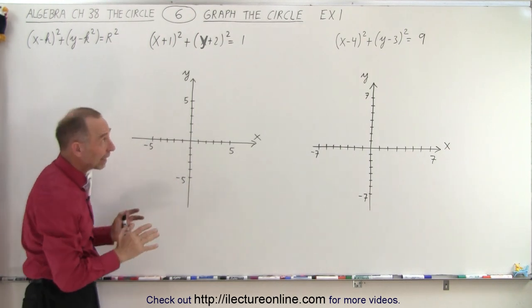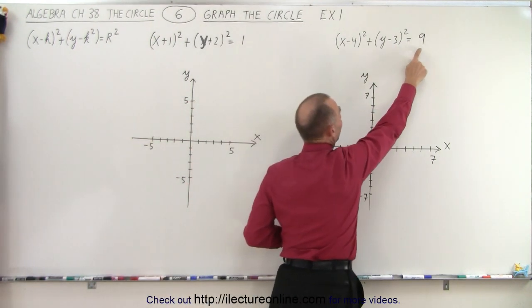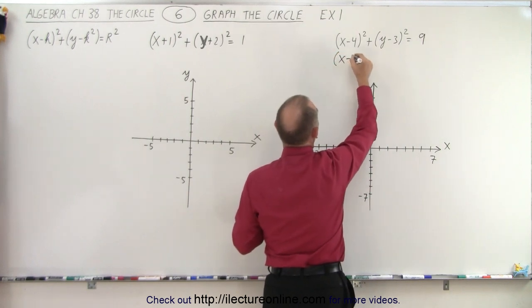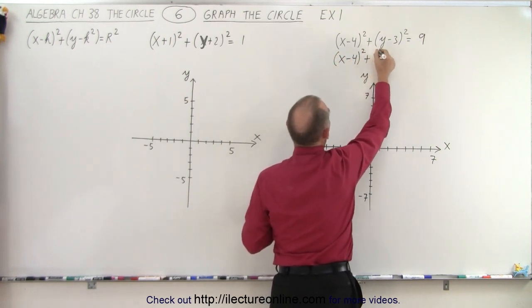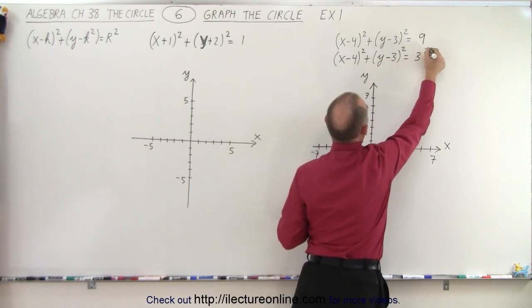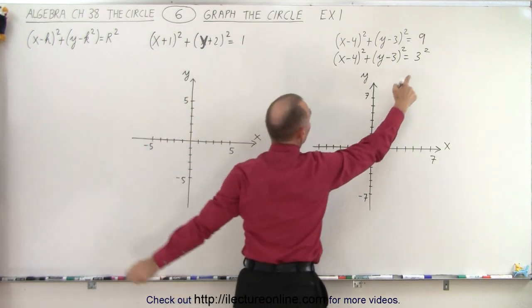You may say well aren't they already in that format? The only difference is that we probably want to write the number as a number squared. So let's rewrite this. This can be written as (x - 4)² + (y - 3)² = 3² because now we can clearly see that the radius is equal to 3.